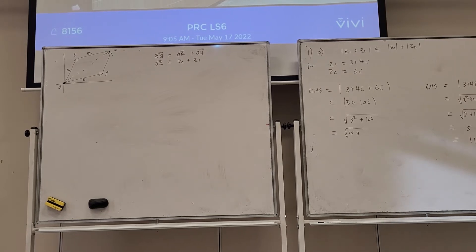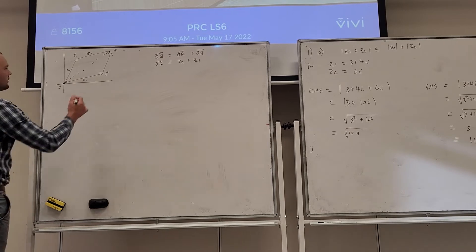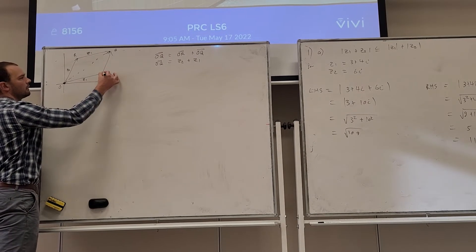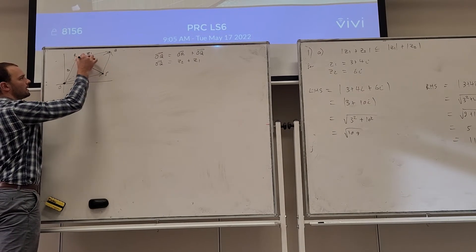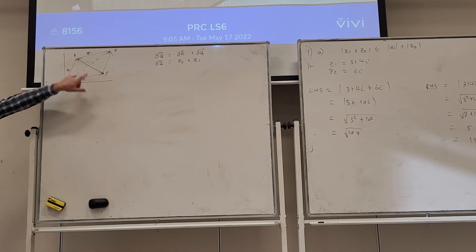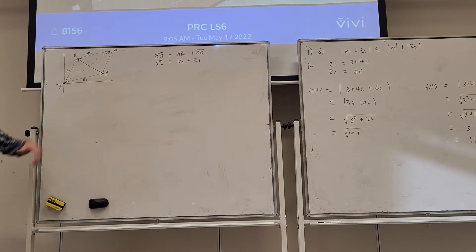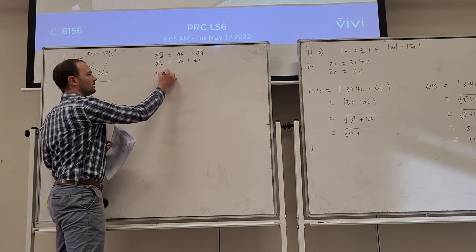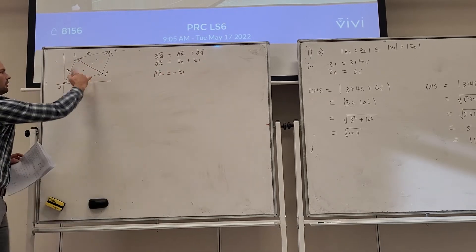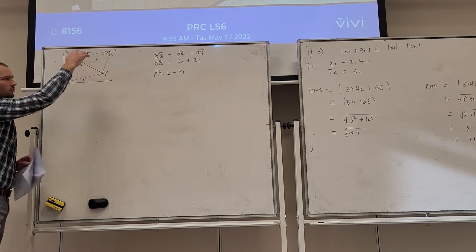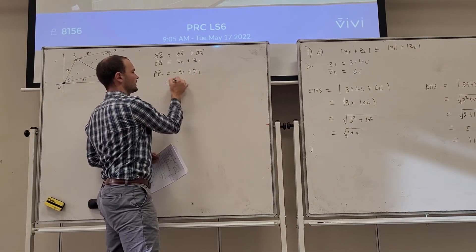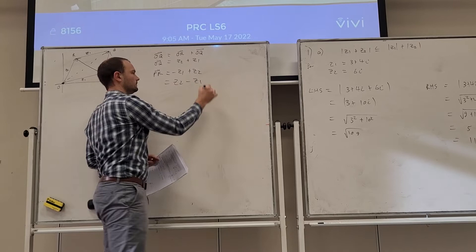What about PR? From P to R: we go negative Z1 and then plus Z2, so PR = Z2 − Z1.